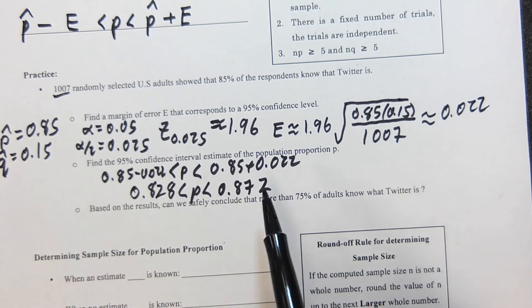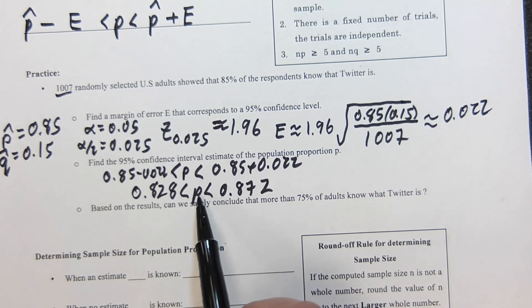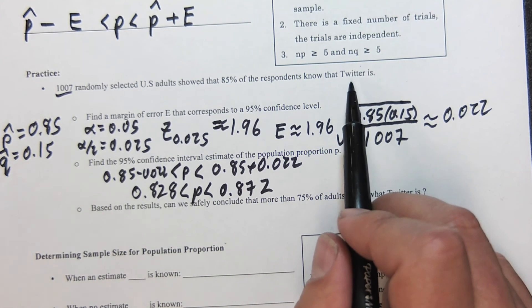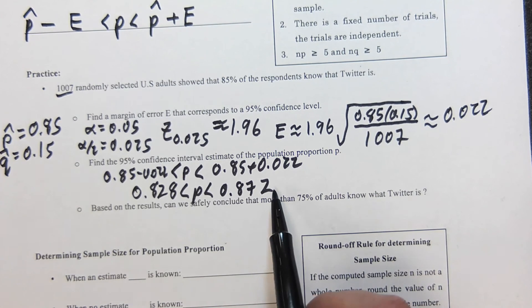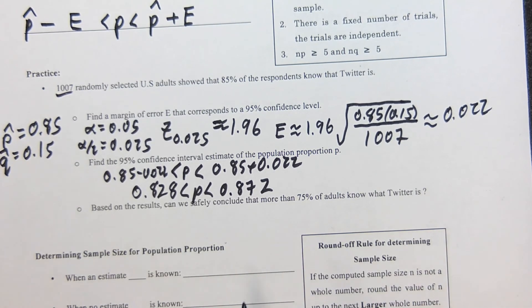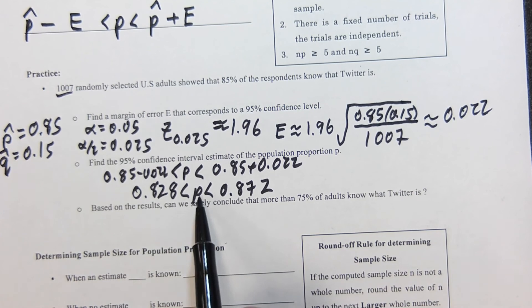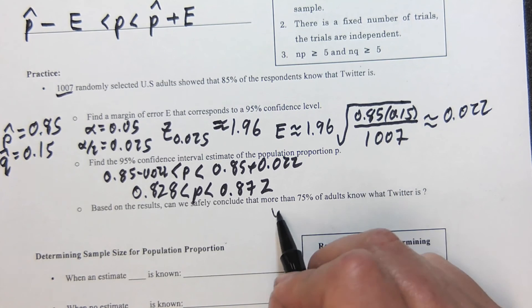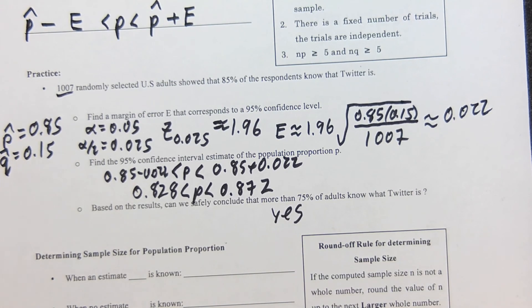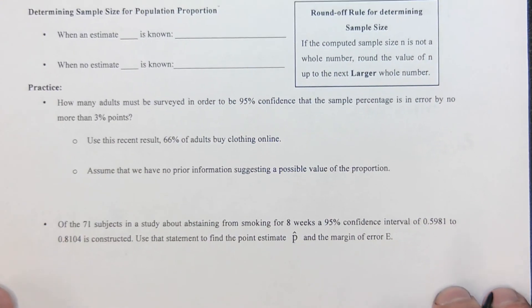Meaning I'm 95% confident that the true proportion of people that know what Twitter is is going to be between 82.8% and 87.2%. That's the conclusion we would come to. Based on the results, can we safely conclude that more than 75% of adults know what Twitter is? If the true proportion is between these two, then the answer is definitely yes—that's way higher than 75%.